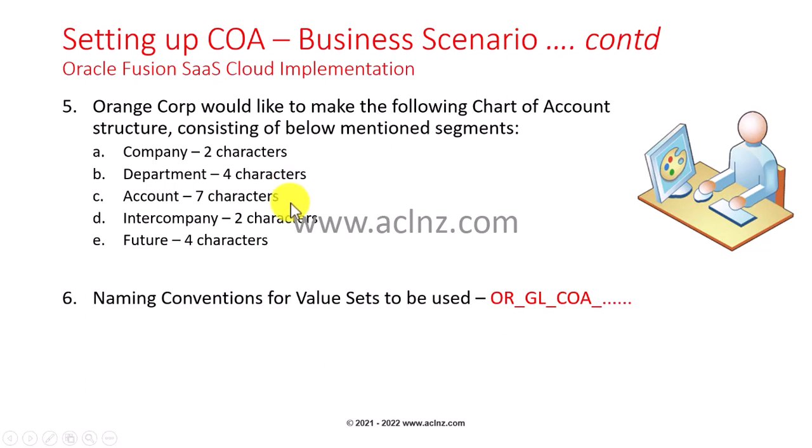Then we have the account segment, referring to the natural account to identify a specific transaction — for example a sales-related transaction or spending money for purchasing materials to assemble a specific product and sell it as a finished good. There could be one account for purchases, another for sales, another for inside sales, another for miscellaneous expenditure, and so on. The account field is designated as seven characters long in the value set.